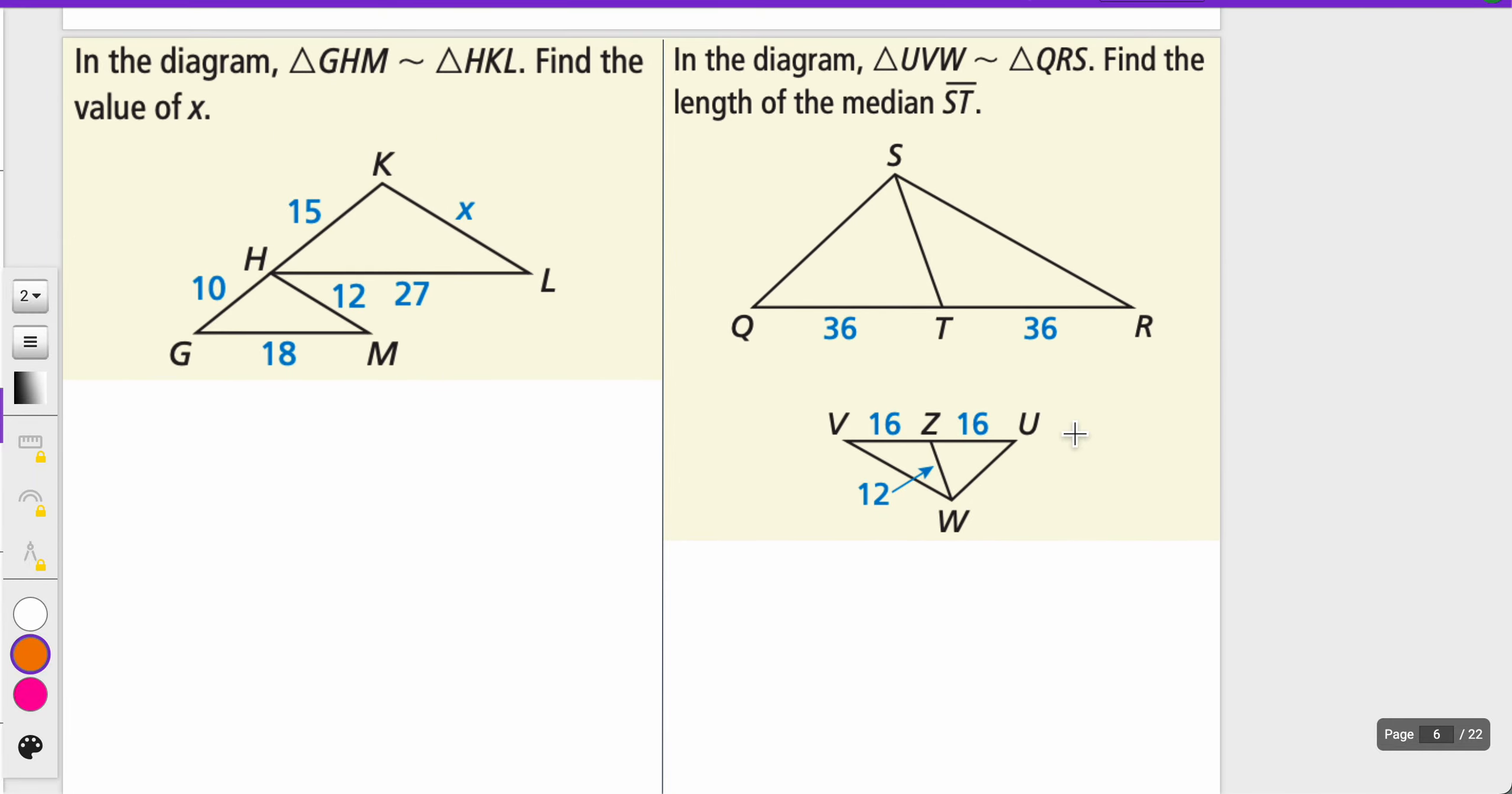Let's try some of these. Find the value of X. Notice that these are similar, so that means I can write a proportion. X looks like it's KL, so it corresponds to HM. I can say X over 12, then pick two other corresponding sides that are showing proportional reasoning. So maybe 15 to 10. You could have used 27 over 18. To solve, we cross-multiply. 12 times 15 is 180, divide by 10, so X equals 18.